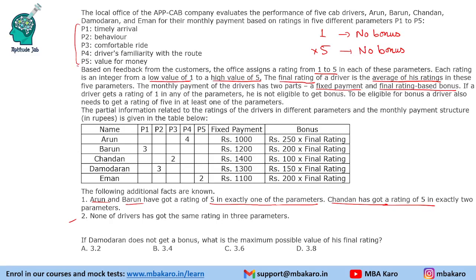One important thing to note: if you read the information carefully, it does not mention that each driver gets a unique rating across different parameters — the word 'distinct' is not used. That means more than one driver can get the same rating. For example, all five drivers can have a rating of 3 or 4 in any of the parameters. This is important because in some CAT DILR questions, distinct values are explicitly mentioned.